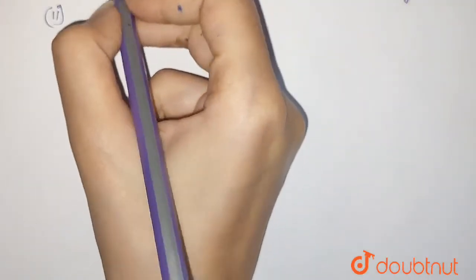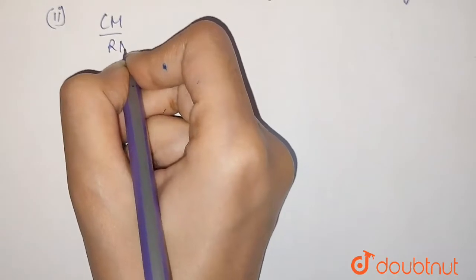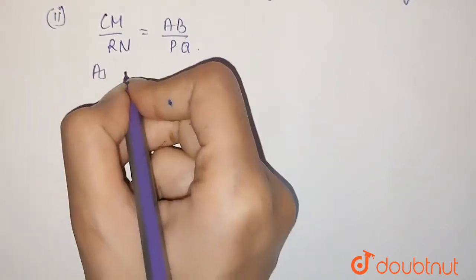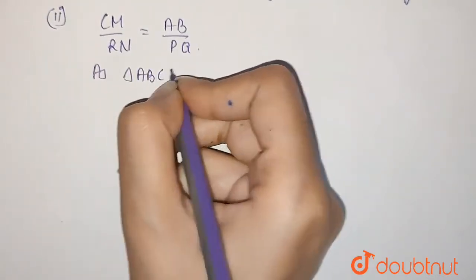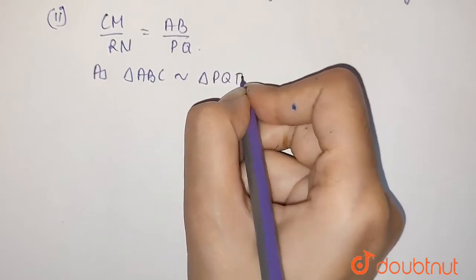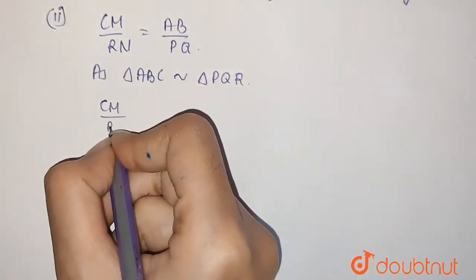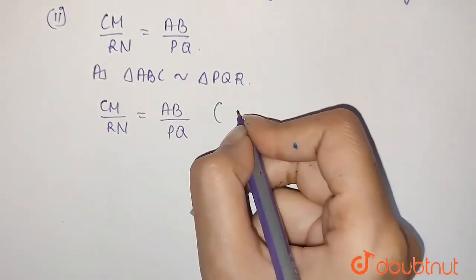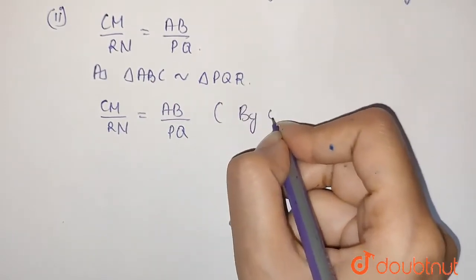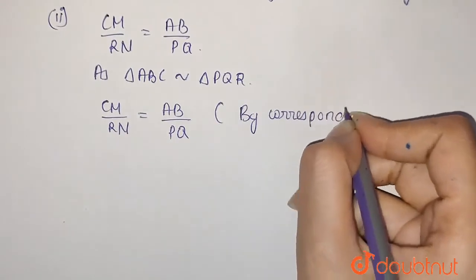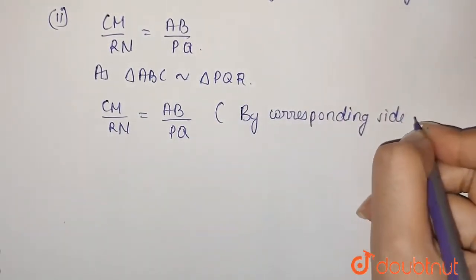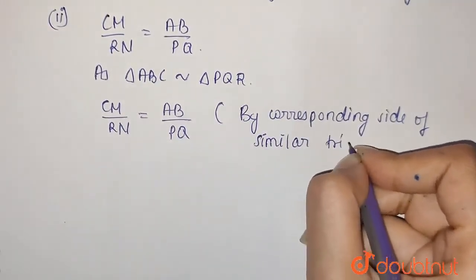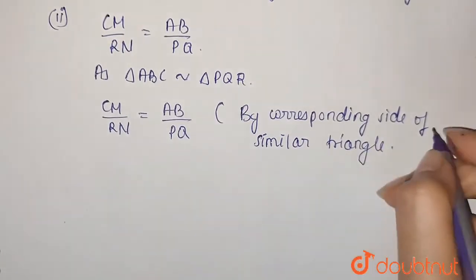Now, we have to prove CM by RN is equal to AB by PQ. As triangle ABC is similar to triangle PQR, CM by RN is equal to AB by PQ by the corresponding sides of similar triangles.